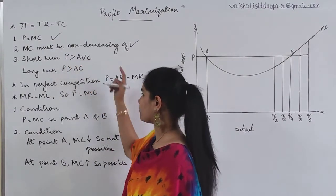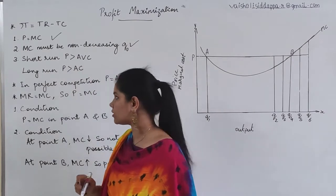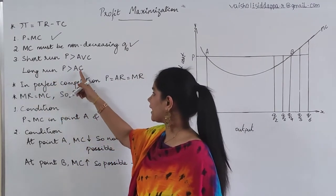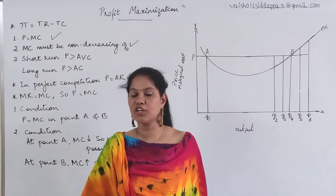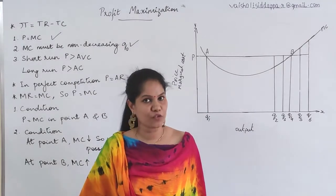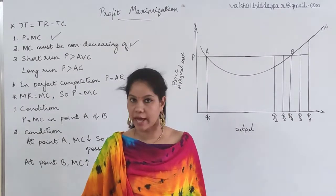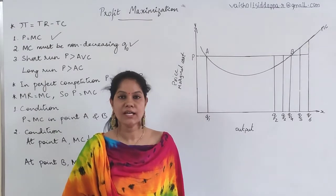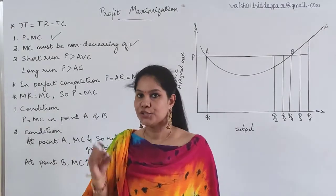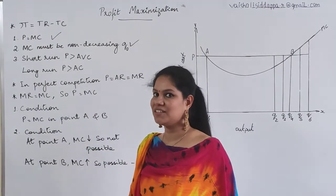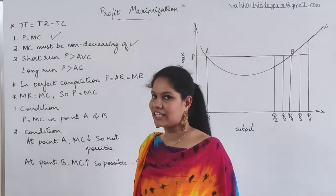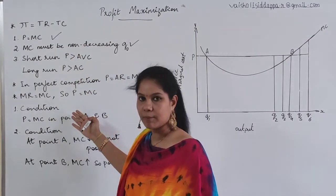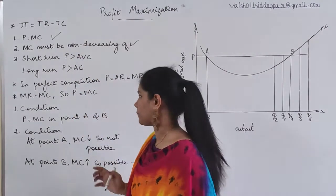Price should be greater than average variable cost. In the long run, price should be greater than AC, because in the long run we do not have variable cost separately — every cost is a variable cost in the long run. So you have to recall concepts from earlier chapters to analyze this particular chapter.